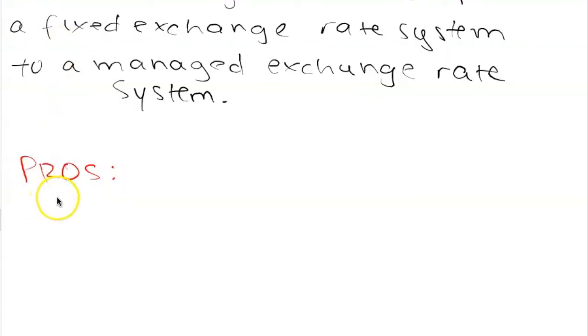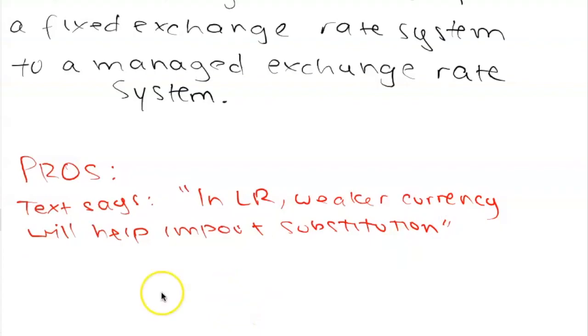Here are some of the pros given by the text. The text says that in the long term, weaker currency will help import substitution. This is given in paragraph 7. What is import substitution? Import substitution is an attempt to substitute domestic consumption of foreign goods to domestic produce, trying to limit imports. How will a weaker currency do this in the long term? If my currency is very weak, importing foreign goods becomes relatively more expensive, and as a result, the quantity demanded of foreign goods decreases, and therefore we would also expect the trade balance to improve.